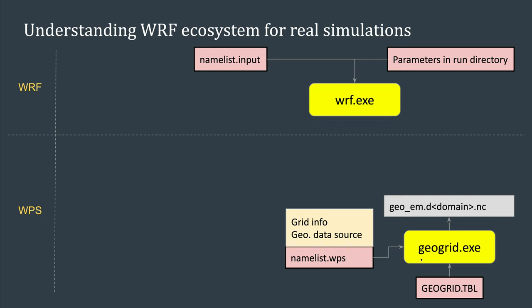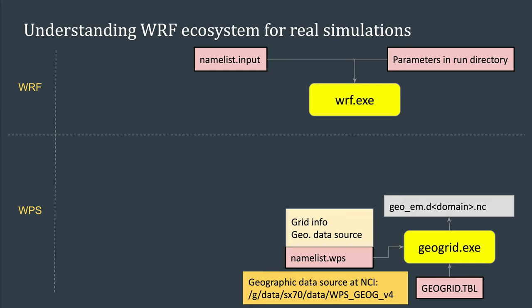Once you run geogrid.exe, you get a geo_em file for each domain of your simulation. If you run at NCI, the geographical data is already installed and you can find it at the specified location.